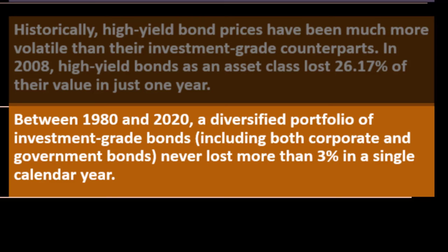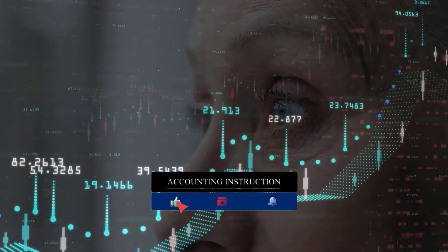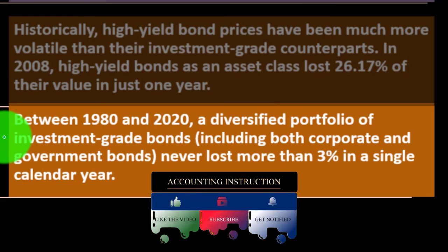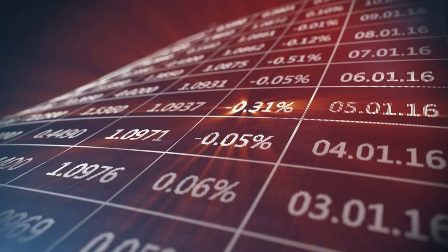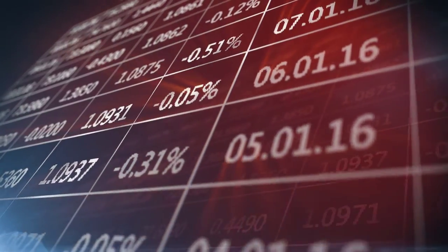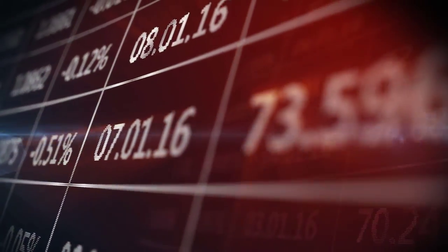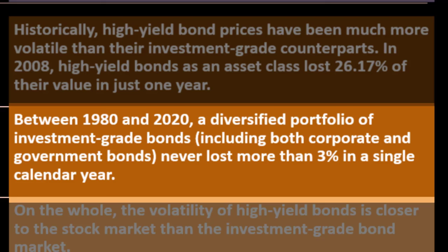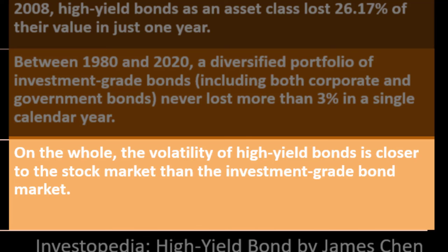By contrast, between 1980 and 2020, a diversified portfolio of investment grade bonds — including both corporate and government bonds — never lost more than 3% in a single calendar year. For individual investors, bonds in a portfolio are often valued for that 'boring' stability — not rising as much as equities, but cushioning against stock market downturns. High yield bonds behave more like stocks in downturns: growing companies with less cash flow are more likely to default in a recession. On the whole, the volatility of high yield bonds is closer to the stock market than to the investment grade bond market.